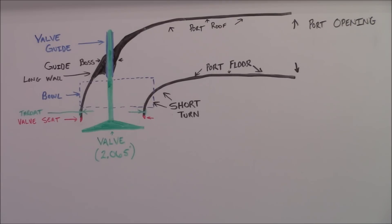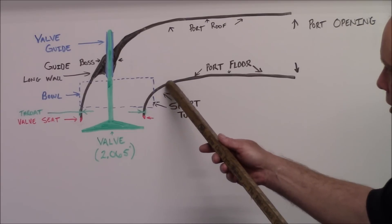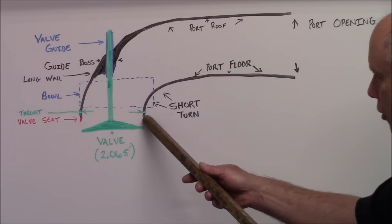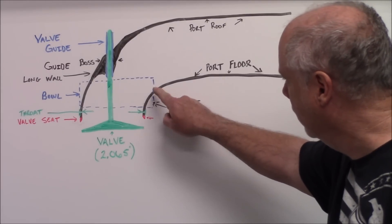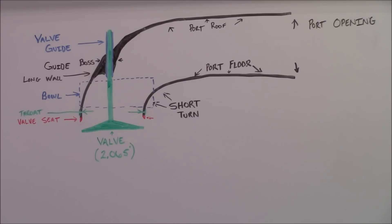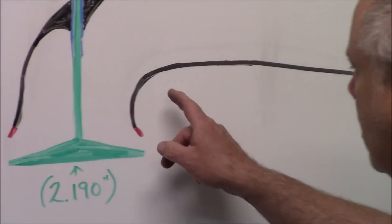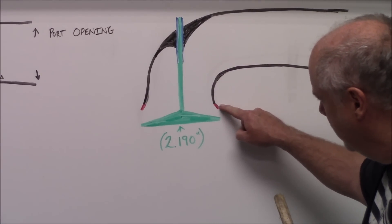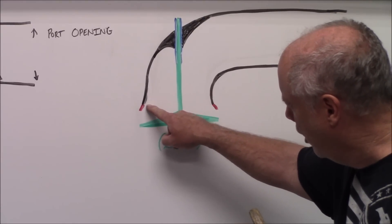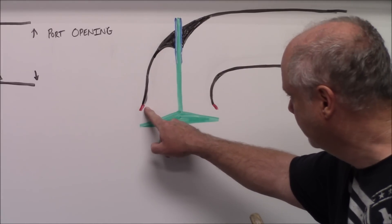The first thing I should mention is look real closely to the unmodified port, how the short turn comes straight down after the turn, right here. When we put a 2190 valve in this head, this short turn gets shaped like this. It starts to come out in this direction, and the backside of the bowl will have this protrusion or hump, as I like to call it.